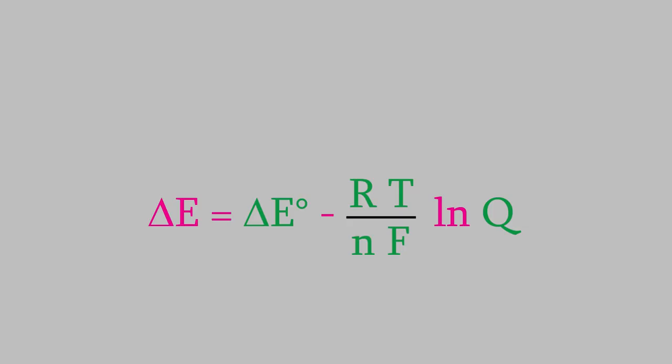Anyway, Nernst developed this equation to describe how the voltage is affected by changes in the temperature and concentration. This is called the Nernst equation in his honor, and it's especially useful because we can use it with any voltaic cell, no matter what the temperature or concentration of the voltaic cell is.